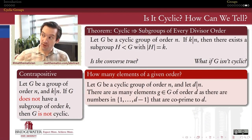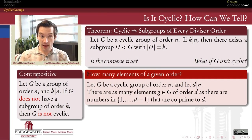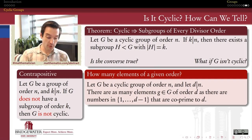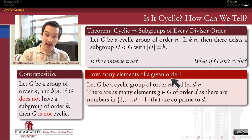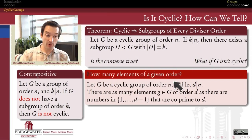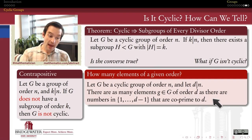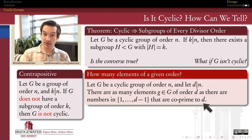It turns out the answer to this question takes us down a bit of a number theory rabbit hole. If we want to know how many different ways we can construct a subgroup of order k, what we're really asking is how many elements in the group have order equal to k. How many elements of order d are there inside of Z mod n? The answer is: there are as many elements of order d as there are numbers from 1 up to d minus 1 that are co-prime to d.